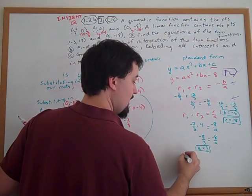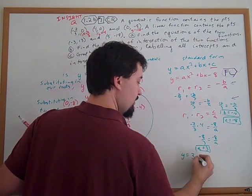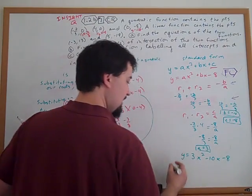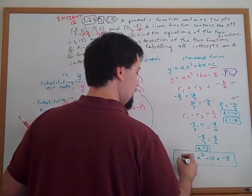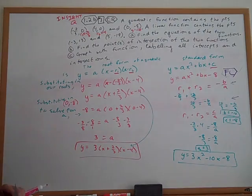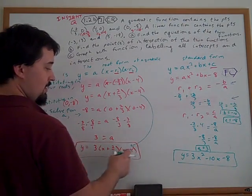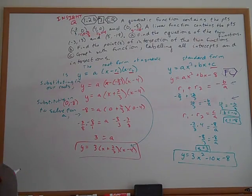So, writing this final form out, we have y equals 3x squared minus 10x minus 8 as our final form. Over here, if we multiply this out, we will obtain a simultaneous result, or an equivalent value, we could say.